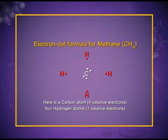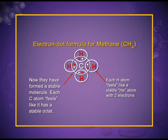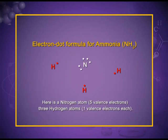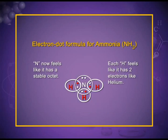This is the electron dot formula for methane (CH4). Each hydrogen atom, shown in red with its electron, surrounds the carbon, which has four valence electrons. Carbon completes its octet and hydrogen completes its duplet; both are in a stable state and methane CH4 is formed. This is the electron dot formula for ammonia (NH3). Nitrogen has five valence electrons and each hydrogen has one electron. Hydrogen completes its duplet and nitrogen completes its octet, so both are in a stable state.